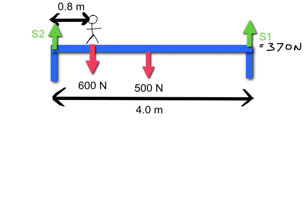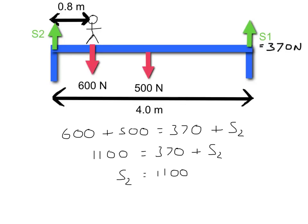Now we know what one of the support forces is. We only have one unknown left, which is the other support force. So, we could just use the fact that the resultant force must be zero to work out S2. Our downwards forces are 600 newtons plus 500 newtons. Our upwards forces are S1 and S2. We've already worked out that S1 is 370, so the only thing we don't know is S2. So, we'll have 1100 on this side is equal to 370 plus S2. That means that S2 must be equal to 1100 minus 370, which is equal to 730 newtons. Job done!